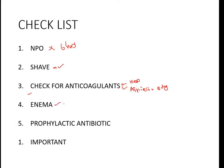These anticoagulants have to be stopped; otherwise there is a risk of bleeding. The patient should have received good bowel preparation — an enema — otherwise during the procedure there is a high chance the patient will pass stool. In our center, we routinely give prophylactic antibiotics, usually injection vancomycin one gram, prior to the procedure.